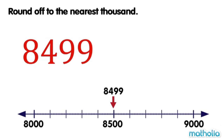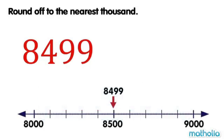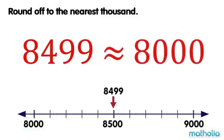Round off to the nearest 1,000. Let's round off 8,499 to the nearest 1,000. When rounding to the nearest 1,000, we look at the digit in the hundreds place. The digit in the hundreds place is 4. Digits that are 4 or less are rounded down. So, 8,499 is rounded down to 8,000. To the nearest 1,000, 8,499 is approximately equal to 8,000.